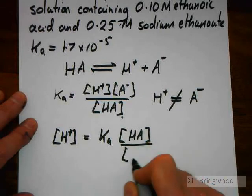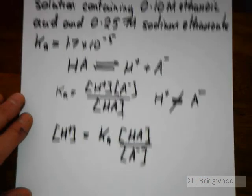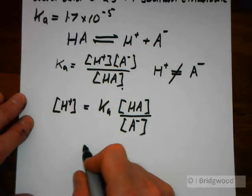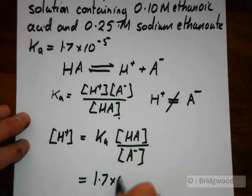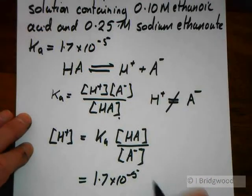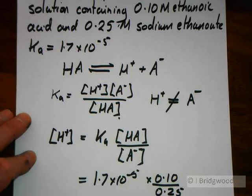We're given all of those values at the top. Ka is 1.7 times 10 to the minus 5. Concentration of HA, our ethanoic acid, is going to be 0.1 and the concentration of our salt sodium ethanoate 0.25. Do the calculation, should come out to be 6.8 times 10 to the minus 6.